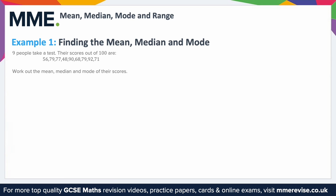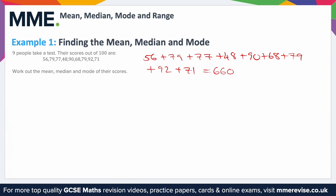I'm going to start off by working out the mean. To do that I'm going to add everything up — 56 plus 79 plus 77 and so on until I've added all of the list up — and that equals 660. Then I need to divide by how many numbers there are. This question actually tells you 9 people take a test, so we can do 660 divided by 9, which gives 73.3 to one decimal place.